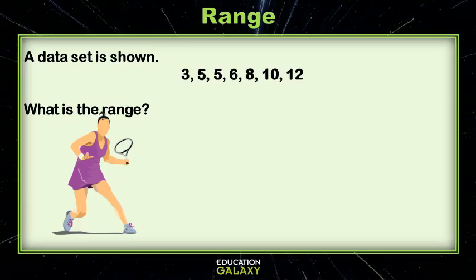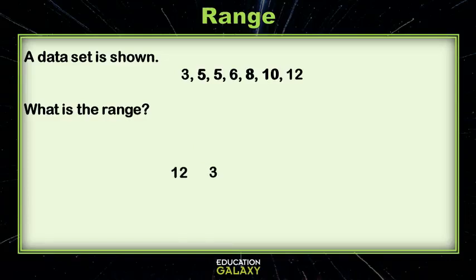Okay, so if we're looking for range, we take the biggest number and then subtract the smallest number from it. So here we have twelve minus three. So we get nine.